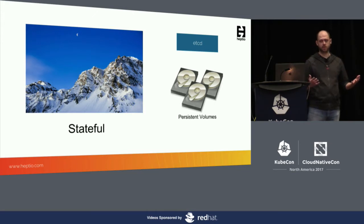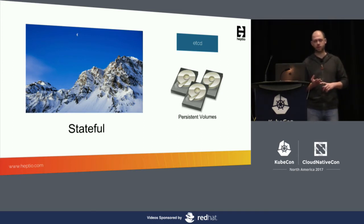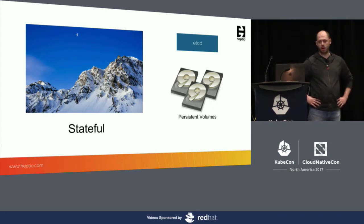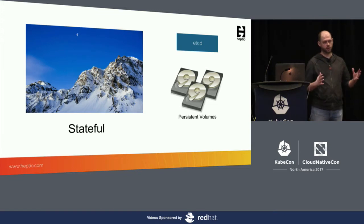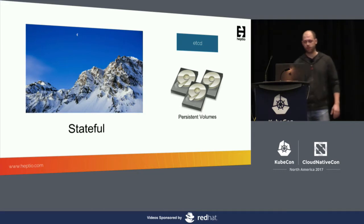State really lives in two places within this system. The first is obviously etcd — the persistent store of all Kubernetes state information. It contains all of the specs for your deployments, services, config maps, and secrets, etc. The second is in your persistent volumes for your applications. If you have workloads using volumes to store persistent data, these are the key components we need to focus on and make sure we have robust backup strategies so we can restore data in the case of a failure.